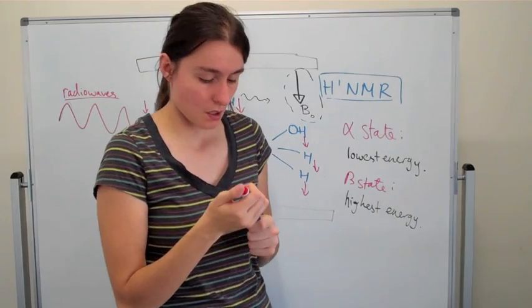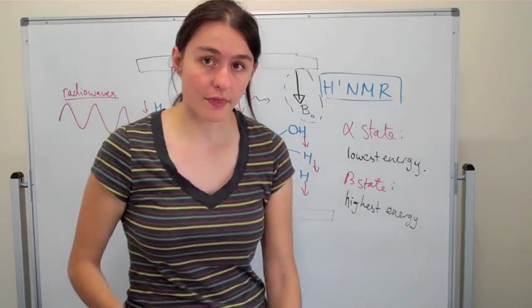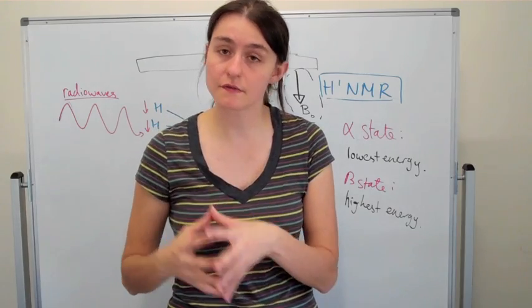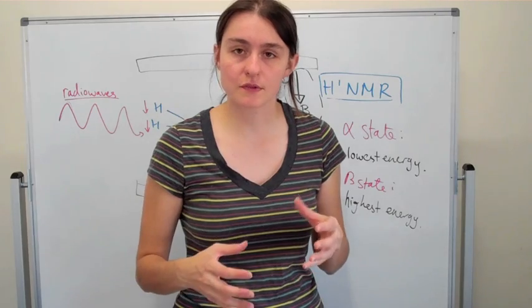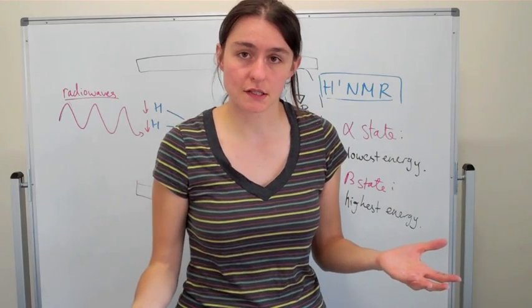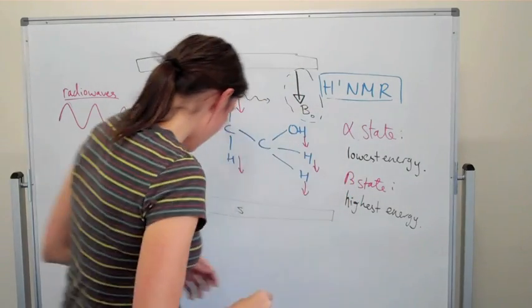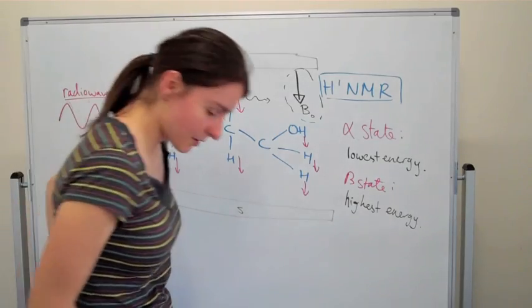That resonance movement will produce a particular signal. So the essential thing of understanding here is that NMR is basically looking at the difference of energy levels between alpha and beta state.